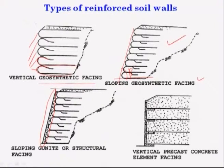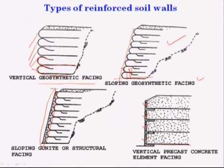In the fourth approach, you take precast concrete element facing. In this precast concrete facing element, layer by layer you place your reinforcement connected to the precast concrete element facing. These are all your four types of reinforced soil walls.